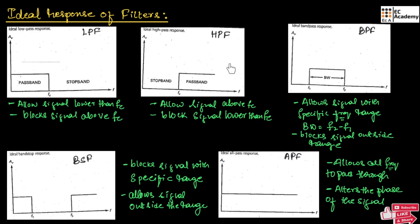This is the ideal response of a high-pass filter. This filter will allow the signal with frequency higher than the cut-off frequency to pass through, and attenuates the signal with frequency lower than the cut-off frequency. So from 0 up to FC, it is stopband where these frequencies will be attenuated. And from FC to the higher frequency, it is passband where the frequencies are allowed to pass through the filter.